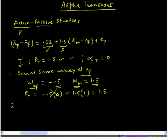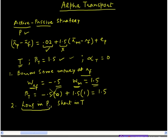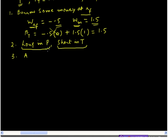We can now summarize our active-passive strategy. It involves doing two things: first, we go long in portfolio P — our active portfolio constructed through active security analysis — and second, we take a short position in portfolio T, which is the combination of the risk-free asset and the market portfolio. This gives us a new overall portfolio. Let's call it portfolio A.